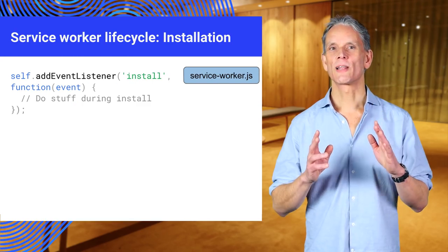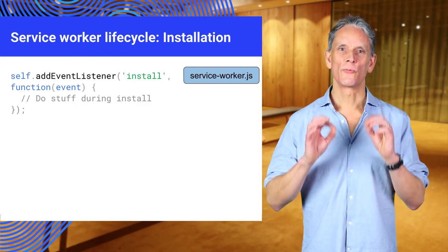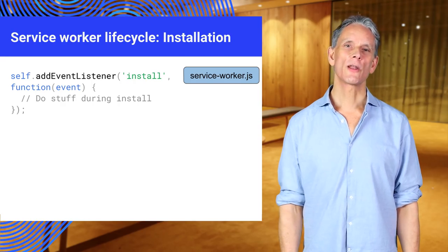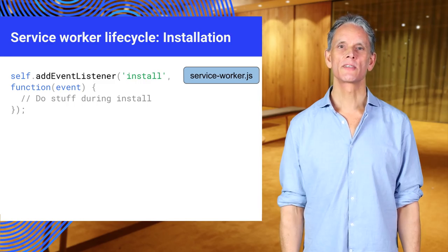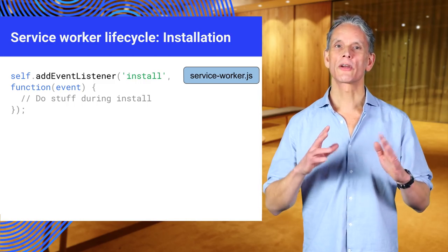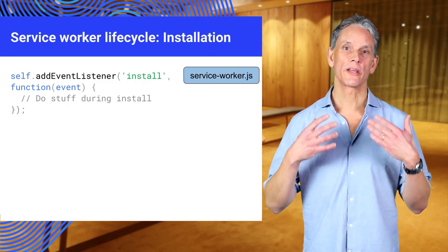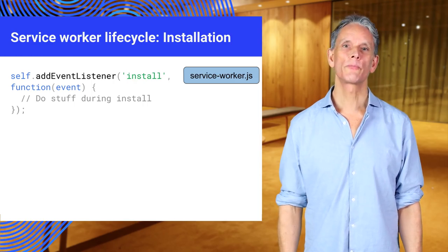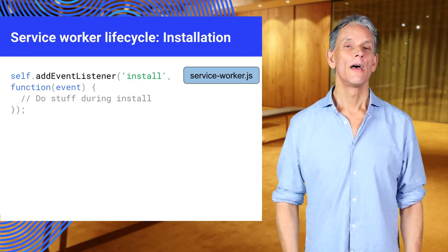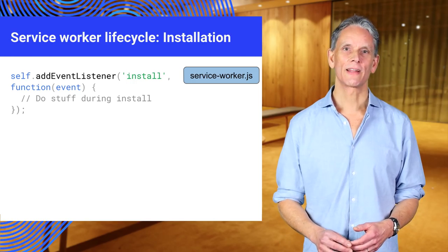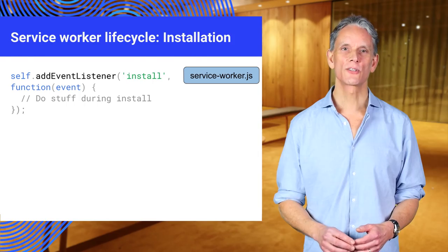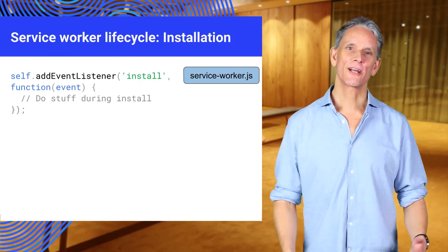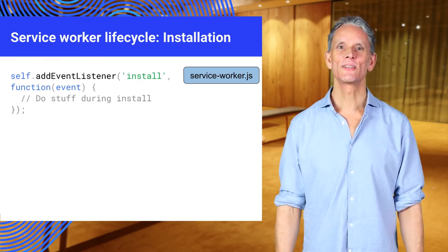Thinking about installation: once the browser registers a service worker, the install event can occur. This event will trigger if the browser considers the service worker to be new — either because this is the first service worker encountered for this page, or because there is a byte difference between the current service worker and the previously installed one. We can add an install event handler to perform actions during the install event. The install event is a good time to cache the app shell or static assets using the Cache API.